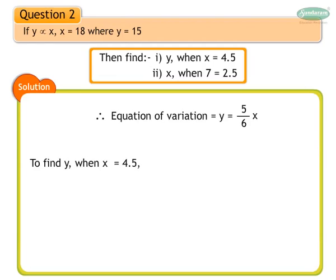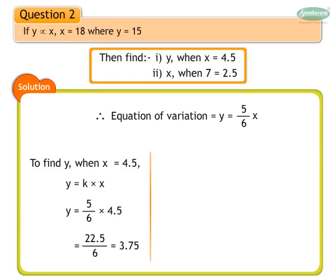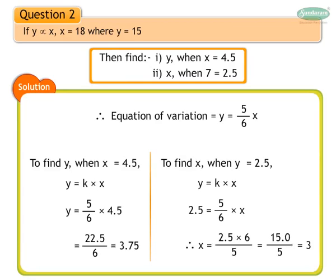Now, to find y when x is 4.5, substitute the values of x and k in the equation y is equal to kx. We get y is equal to 5 upon 6 into 4.5, which gives y equal to 3.75. To find x when y is equal to 2.5, use the same equation and substitute for y and k. We get x as 3.